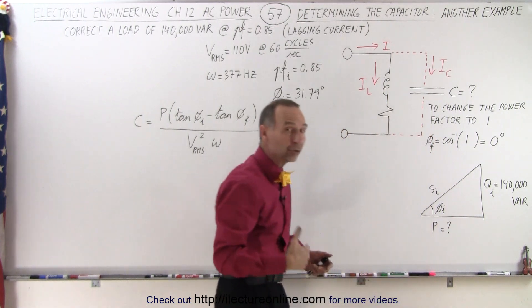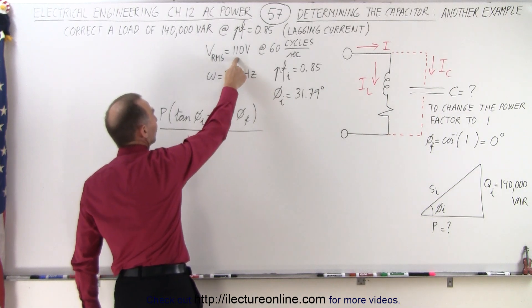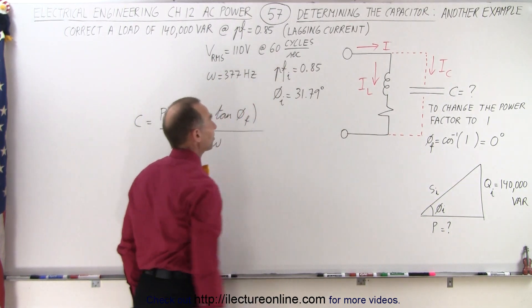They didn't actually give us the power consumed by the resistor, by the load. They do give us that the VRMS is 110 volts and that omega is 377 because the frequency is 60 cycles per second.